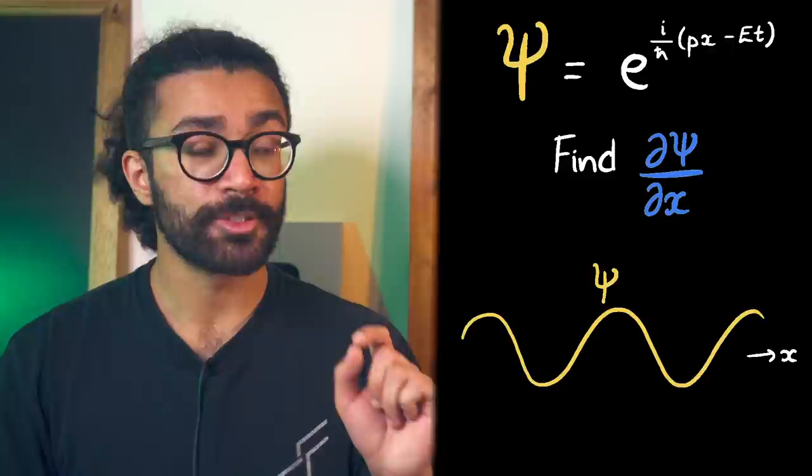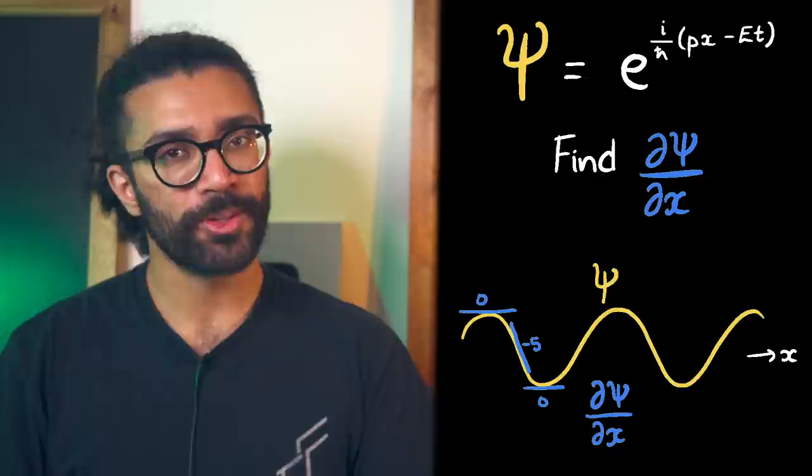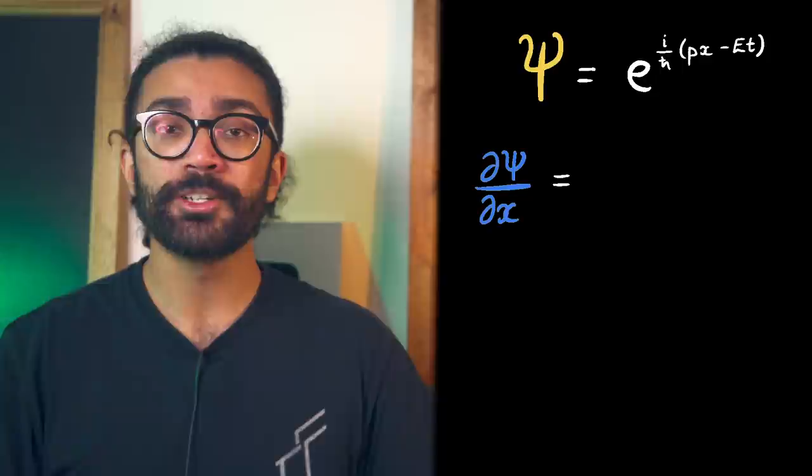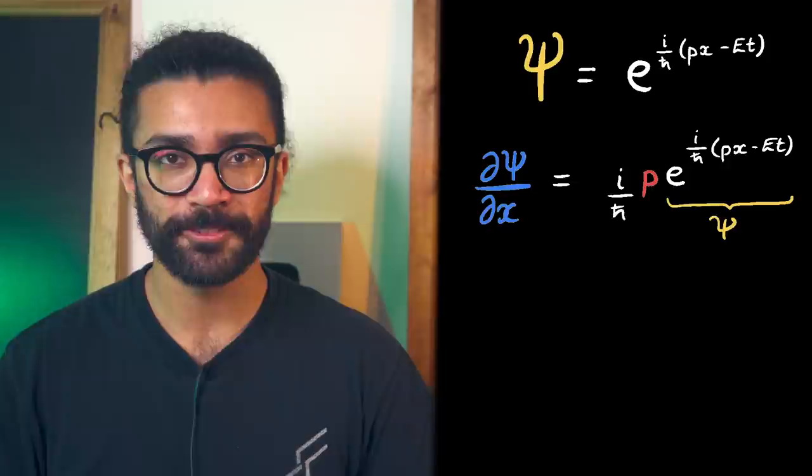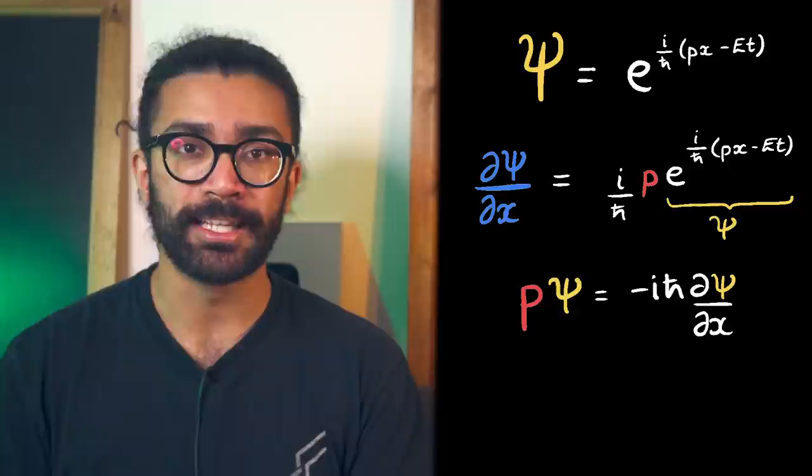Really though, we aren't even bothered about finding out the gradient here. The only reason we're differentiating our function is because we find out that the end result is p, the momentum, multiplied by some other stuff, including the original wave function itself. This means we can rearrange this last equation to solve for the momentum p, which ends up looking like this.